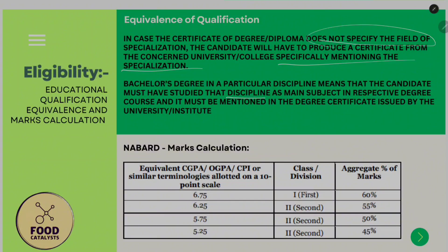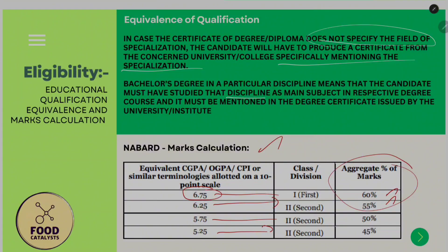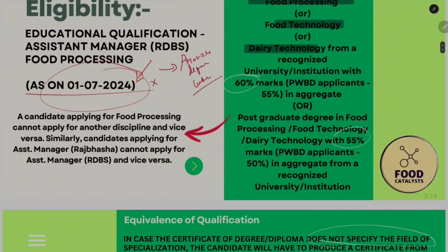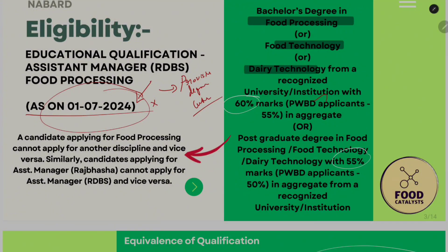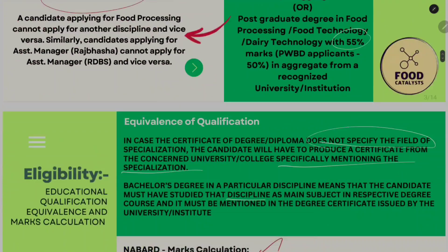Marks calculation is straightforward. On a 10-point CGPA/OGPA/CPI scale: 6.75 equals first class (60%), 6.25 equals second class, 5.75 equals second class (50%), and 5.25 equals second class (45%). This aggregate is important since thresholds are 60% for bachelor's and 55% for postgraduate. Candidates with physical disability (PwD) get an additional 5% relaxation in minimum marks.